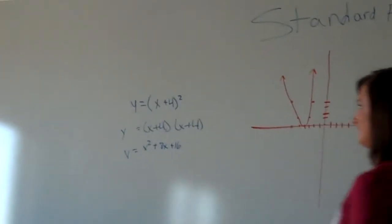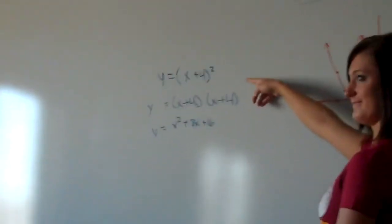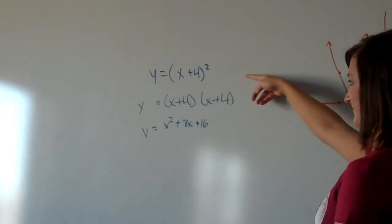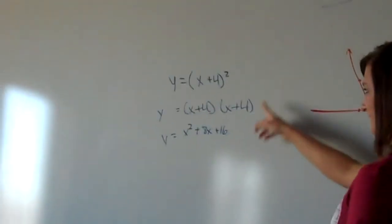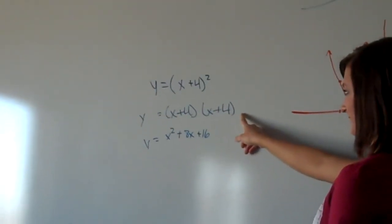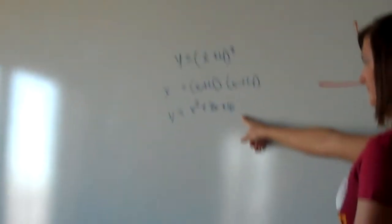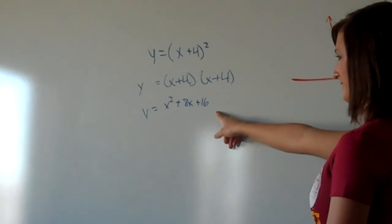How we found the equation was y equals the quantity x plus 4 squared, and we broke that down into x plus 4 and x plus 4, and then we just foiled it and got x squared plus 8x plus 16.